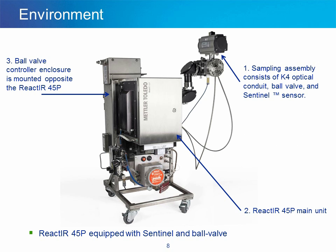For a contemporary system, the setup looks like this. Number 1 is the sampling assembly, which consists of a K4 optical conduit, ball valve, and Sentinel sensor. Number 2 is the React-IR 45P main unit. Number 3 is the ball valve controller enclosure, which is mounted opposite the React-IR 45P. Both can be placed on the same cart and transported, for instance, in a pilot plant application together.